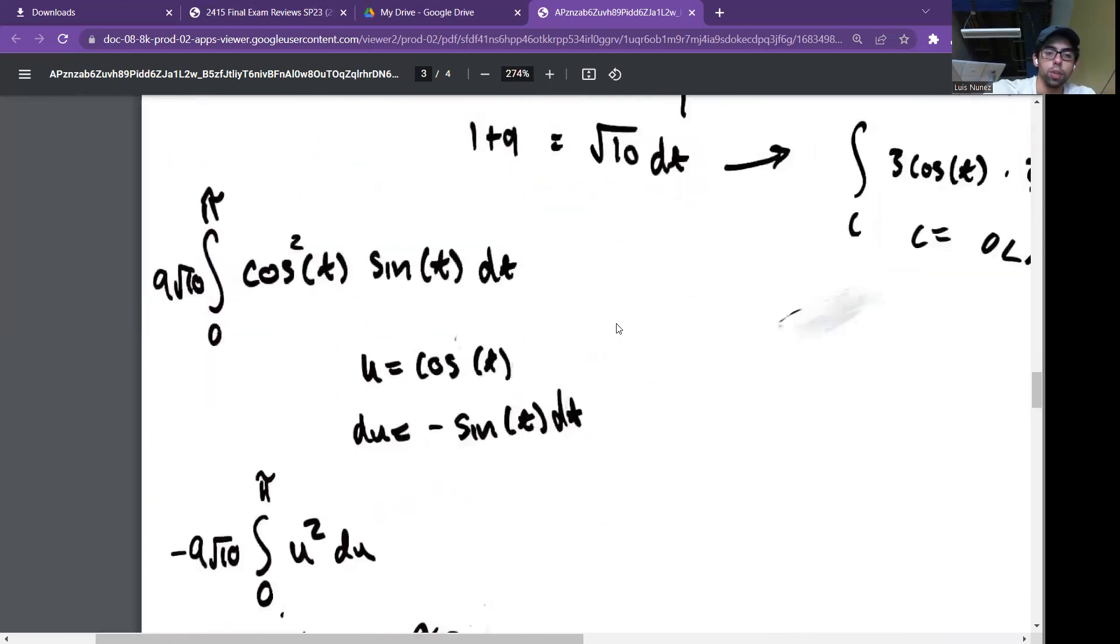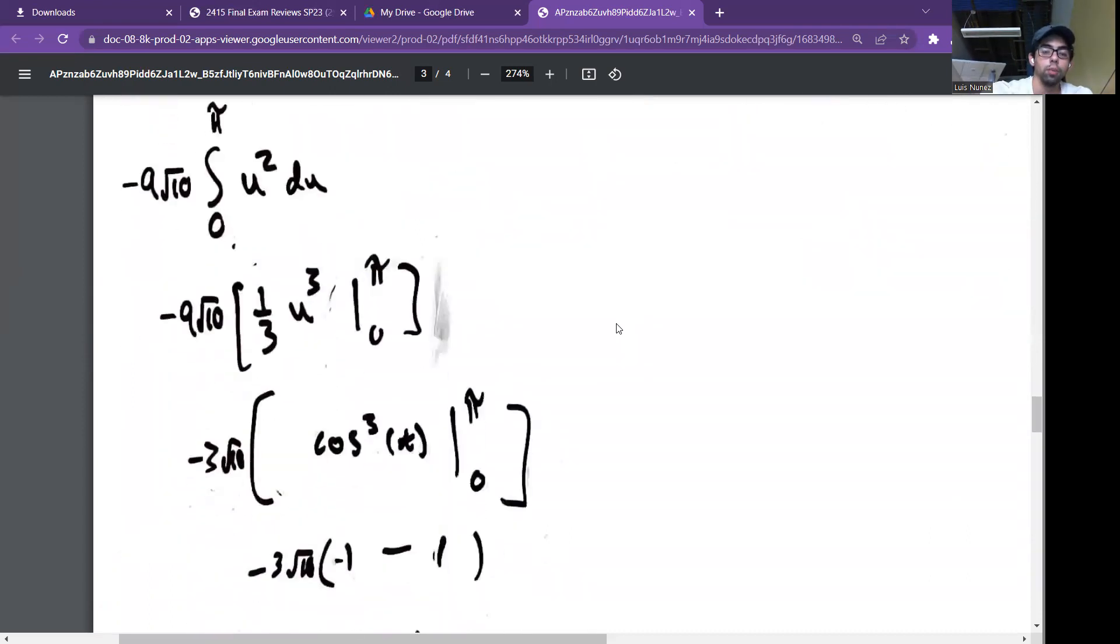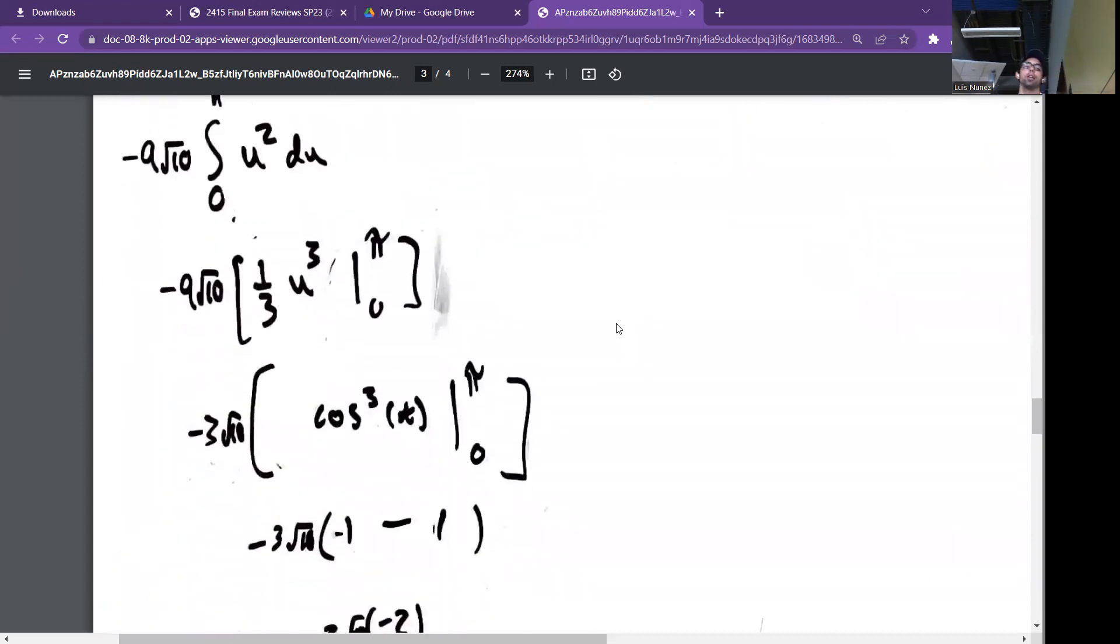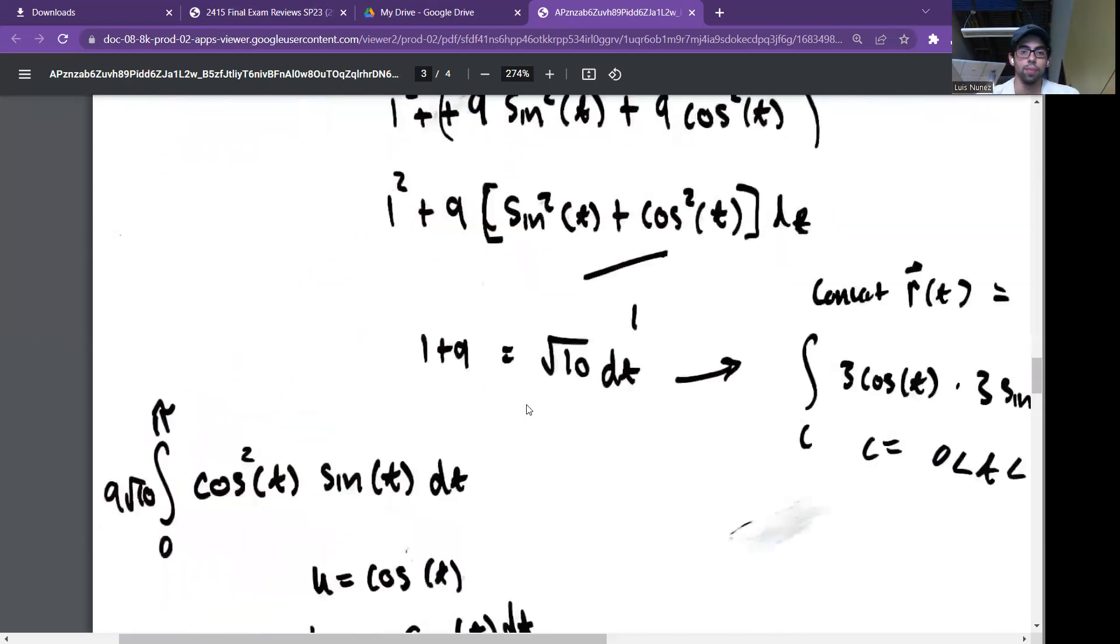I'll give you a better explanation. Bounds are from π to 0, and I ended up integrating. After the integration, I evaluated: negative 3 times cosine squared evaluated from π to 0. That gives negative 3π times (1 minus negative 1), which is negative 3π times 2, giving negative 6 square root of 10. Thank you.